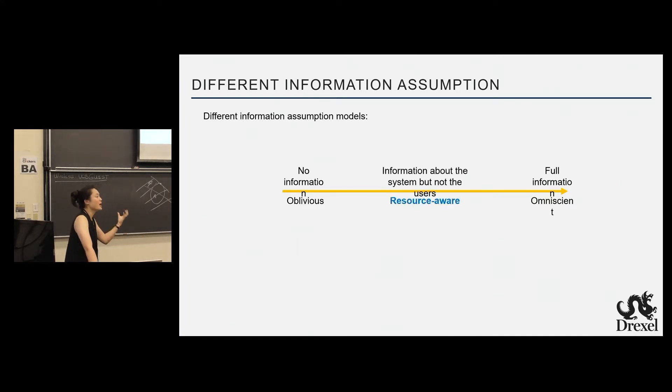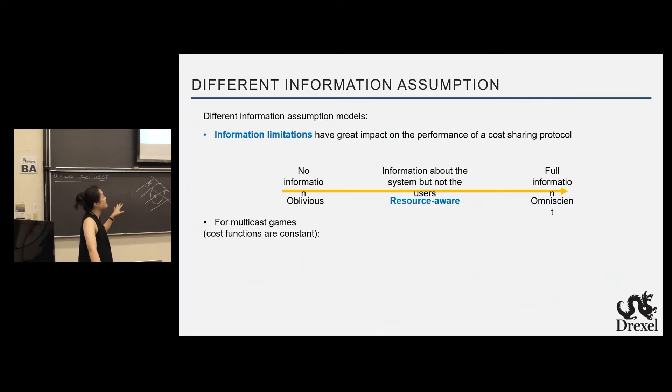So some of the prior works, given these two concerns that I just proposed, have this very nice protocol model that sits right between oblivious and omniscient, where they assume, okay, you know the graph, you know the cost function, you know the system, but you don't know the set of users that changes day to day. And just to kind of demonstrate how these information assumptions or information limitations have a great impact on the performance of the cost-sharing protocols. For multicast games, where all of the cost functions are constant, the prior work has shown that no resource-aware mechanism can do better than log n, whereas there exist omniscient protocols that give you a two. That's a very huge gap. And then I want to remind everyone, the only difference between the resource-aware mechanism and omniscient mechanism is the fact that omniscient mechanism knows the set of users.